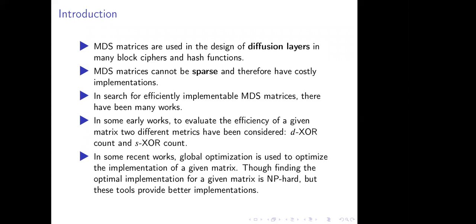In search of efficiently implementable MDS matrices, there have been many work proposed. To calculate the cost of MDS matrices, initially two metrics have been proposed. We consider two metrics: first one is direct XOR count and the second one is sequential XOR count. Here, we look at the cost of each entry of the MDS matrices. Then we calculate the whole cost of the implementation of MDS matrices. In this sense, we have looked locally.